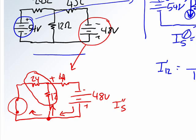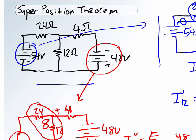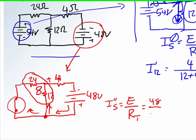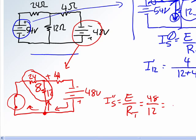So I double prime S is going to be equal to E divided by the total resistance. In this case, it's 48, and what is our total resistance? So 12 times 24 divided by 36 gives us an 8-ohm resistance, plus the 4-ohm resistance is 12, so it's going to give us 4 amps going this way.